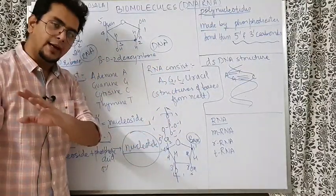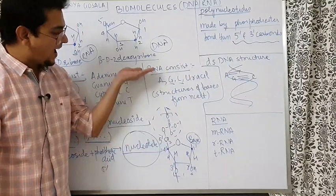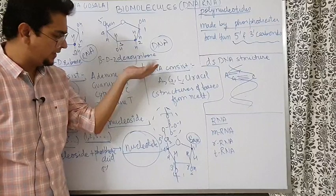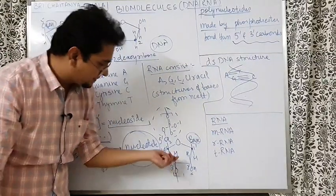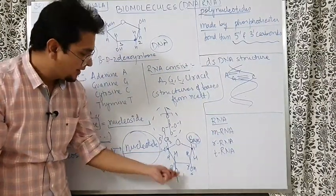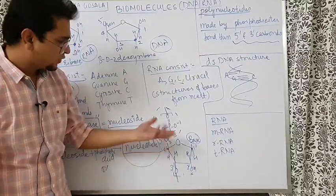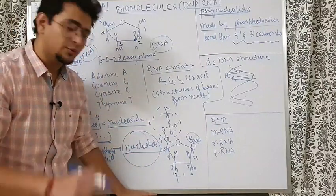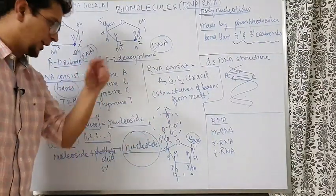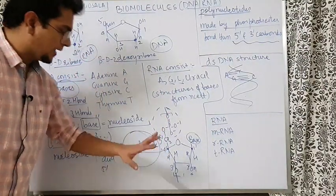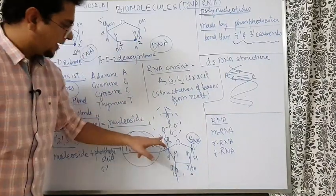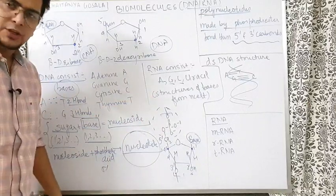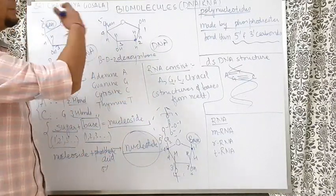In the polynucleotide chain, the last phosphate group at the 5-prime end is free, and the bottommost 3-prime end contains a free OH group. That is why we describe chains as going from 5-prime to 3-prime. The 3-prime OH group and the 5-prime phosphate group are associated in phosphodiester bond formation, through which we get the polynucleotide.